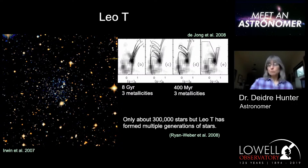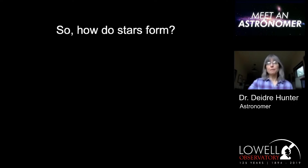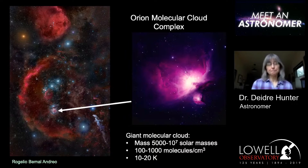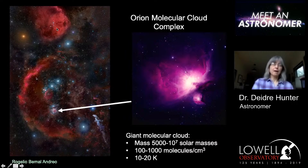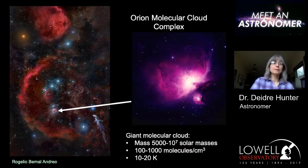So how do stars form? Stars form out of clouds in the interstellar medium. We'll come back to the process of how the clouds form, but first let's talk about what happens once you have a cloud. The closest one to the Earth is the Orion molecular cloud complex — I think this is one of the most beautiful pictures in astronomy. This picture shows the Orion molecular cloud complex on the left; the molecular cloud complex is behind the constellation.